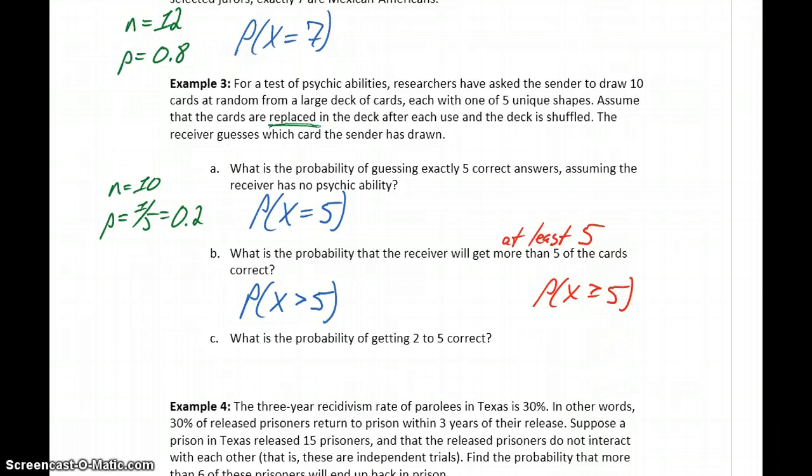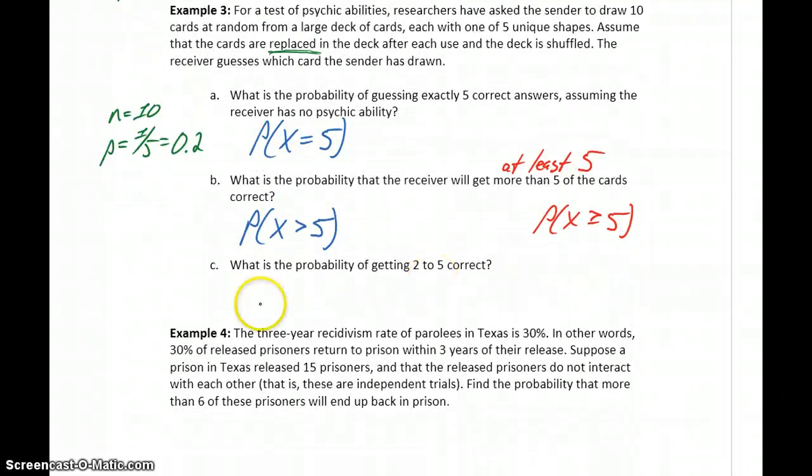And in our last example, what's the probability of getting two to five correct? So this would mean we want anywhere from two to five correct guesses. So we have that compound inequality statement.